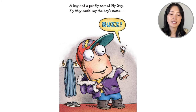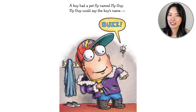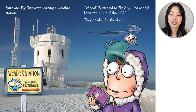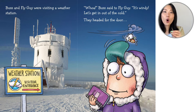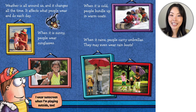Opening it up, we see a boy had a pet fly named Fly Guy. Fly Guy could say the boy's name, Buzz. Here are two main characters: Buzz and Fly Guy. Buzz and Fly Guy were visiting a weather station — visitor entrance. Buzz said to Fly Guy, it's windy, let's get out of the cold. Fly Guy's holding on. They headed for the door and into the weather station.